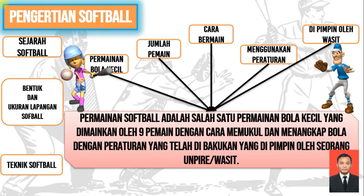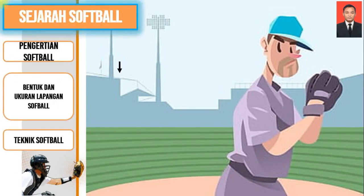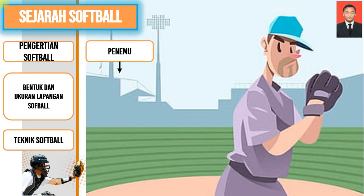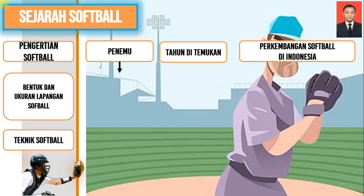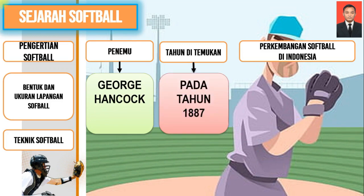Kita masuk ke materi berikutnya, yaitu tentang sejarah permainan softball. Untuk sejarah, kita cukup mengetahui tiga kriteria sejarah dalam permainan softball: yang pertama penemu dari permainan softball, kemudian tahun ditemukannya, dan perkembangannya di Indonesia. Penemu permainan softball adalah George Hancock, pada tahun 1887.